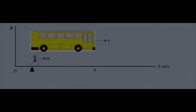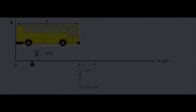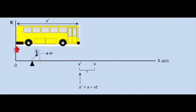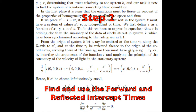Okay, let's begin. Like Einstein, we presume that at time t, the front of the moving system is at position x. Step one: Einstein finds the length of the moving system by assuming that at time t equals 0, the rear of the moving system is at the origin. This means that the front of the moving system is at x prime, and as explained in the last episode, this repositioning allows us to use x prime as the length of the moving system, which we'll need for the forward and reflected intercept equations.